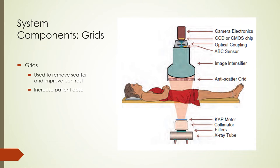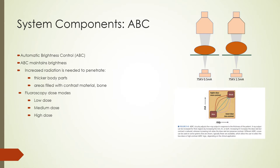An important function of fluoroscopy imaging is maintaining image brightness and signal-to-noise ratio for different anatomies or thicknesses. This is accomplished by an automatic brightness control or ABC system. ABC ensures that more radiation is used to penetrate thicker or denser anatomy and less radiation is used for thinner anatomy — similar to the AEC system in general radiography. A sensor on the output side of the image intensifier detects light output and compares it to a reference. Differences trigger a feedback circuit that causes the generator to adjust kV, mA, or both. Predetermined curves can be used to maintain image brightness by increasing kV, mA, or both.